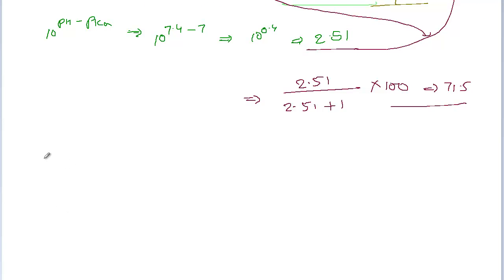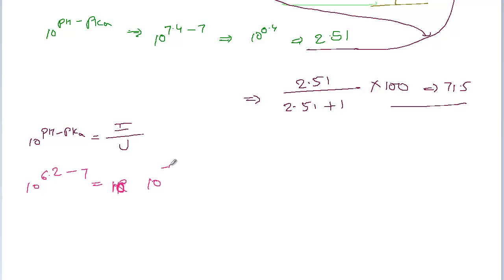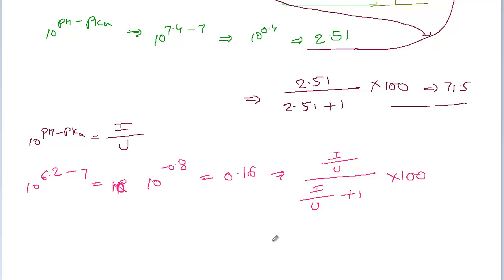Now let's do the same calculation for urine. 10 to the power of (pH minus pKa): pH in urine is 6.2 and pKa is 7, so that's 10 to the power of (6.2 minus 7) equals 10 to the power of minus 0.8, which equals 0.16. Plugging into equation 3: 0.16 divided by (0.16 plus 1) times 100 equals 13.7% ionized in urine.